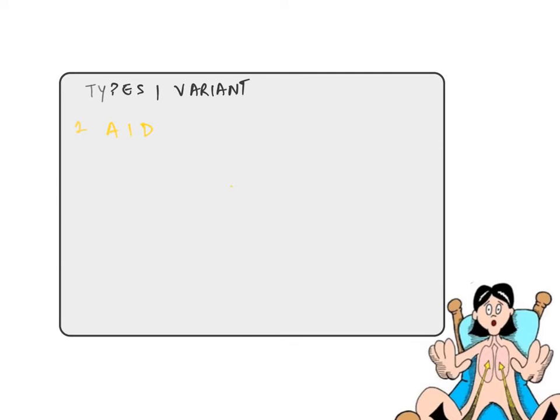The first variant is acute inflammatory demyelinating polyneuropathy, which is the most common variant. Second is acute motor axonal neuropathy. Third is acute motor sensory axonal neuropathy or AMSAN. And last is Miller Fischer syndrome.